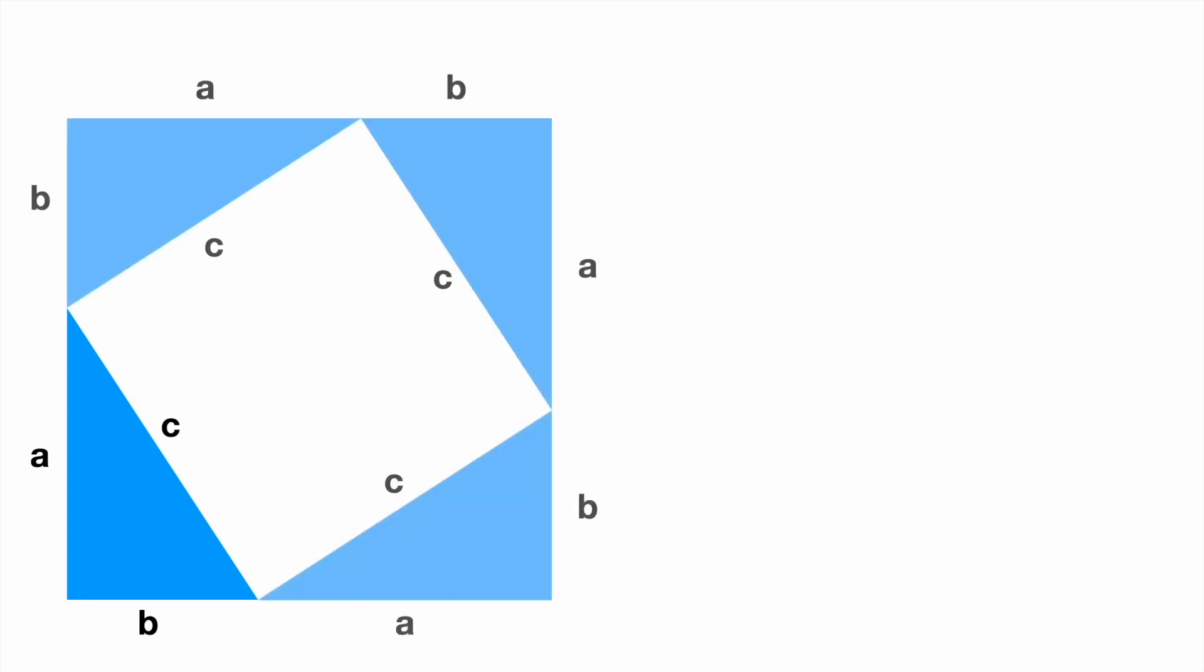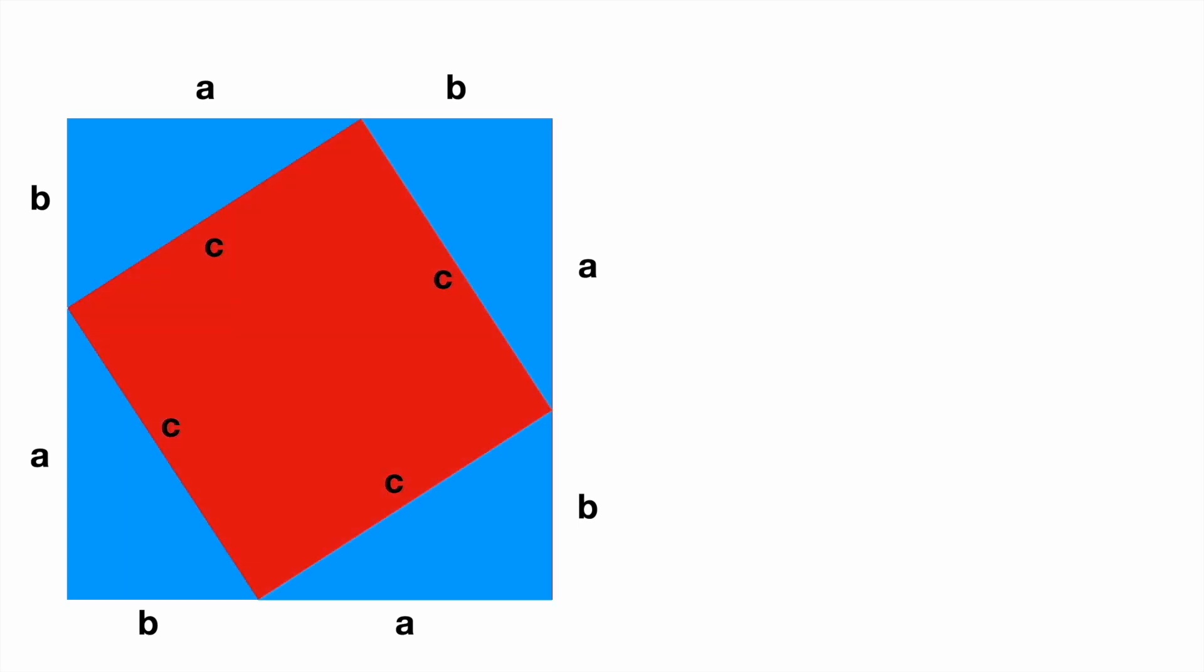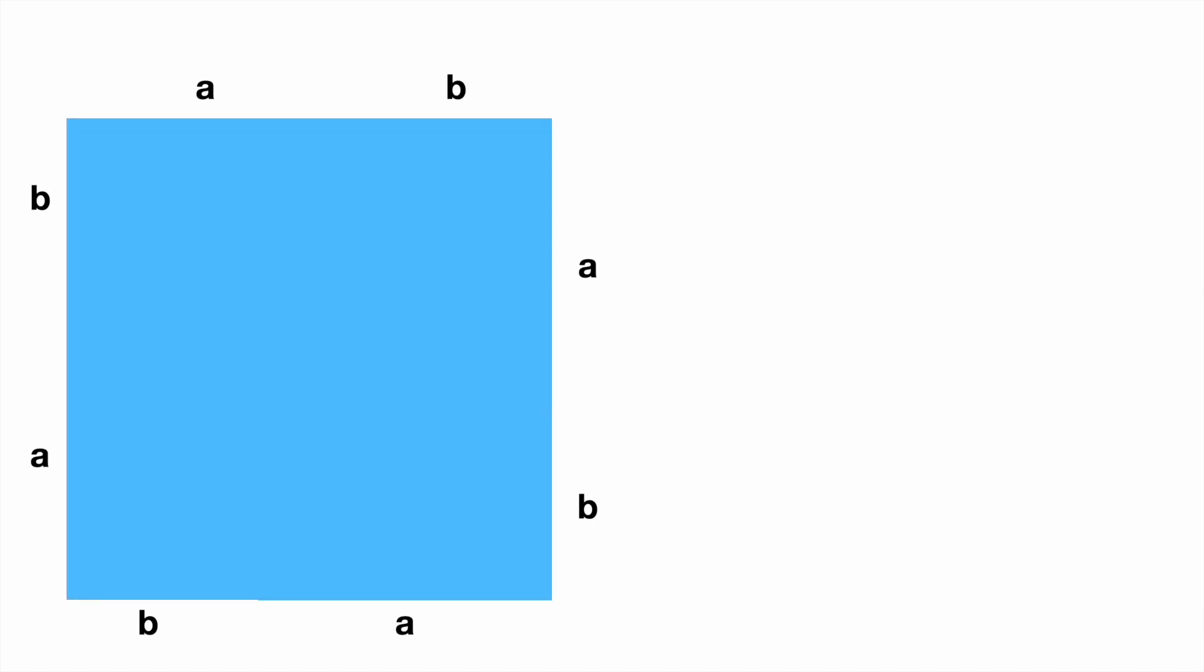We then add three more triangles and organize them as seen on your screens. This configuration of all four shapes creates two squares, the small one shaded in red on your screens with side lengths equal to c, and the larger one shaded in blue with side lengths equal to a plus b.